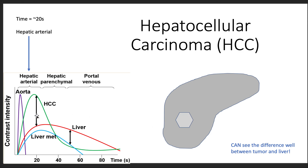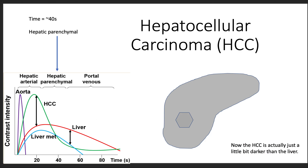This arrow here is showing the difference in brightness. During this arterial phase, the liver is getting brighter here in the red curve, but the HCC is getting really bright. So that's what you can see here, where this hexagon represents the HCC. Then, as time progresses, we are ending the arterial phase and getting towards the venous phase.